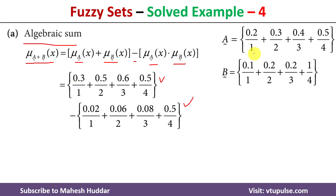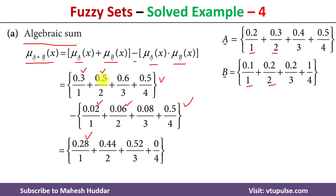For element 1, the membership value is 0.2 and 0.1; adding both gives 0.3. For element 2, it is 0.3 and 0.2, which gives 0.5, and so on. The multiplication: 0.2 × 0.1 = 0.02, and 0.3 × 0.2 = 0.06, and so on. Taking the subtraction: 0.3 − 0.02 = 0.28, and 0.5 − 0.06 = 0.44, and so on. This is how we calculate the algebraic sum of two fuzzy sets.